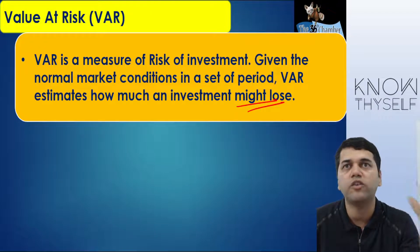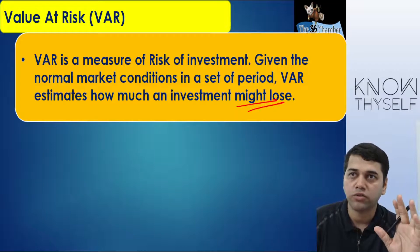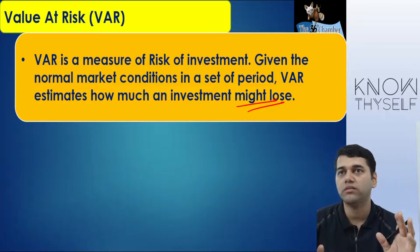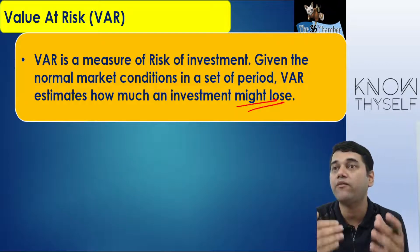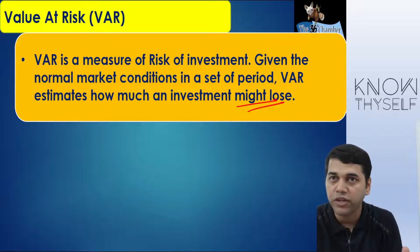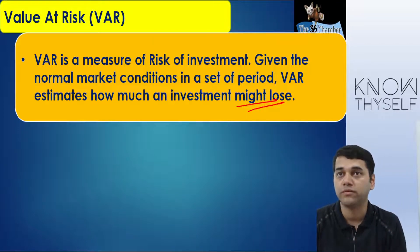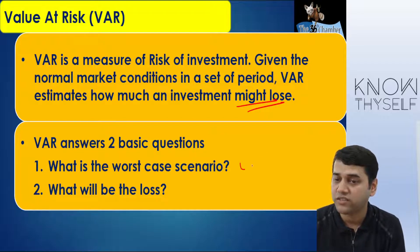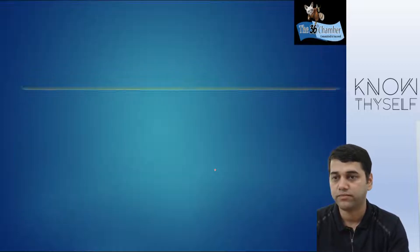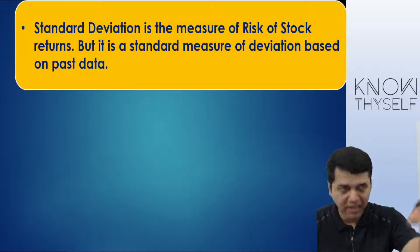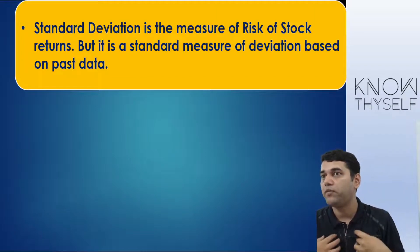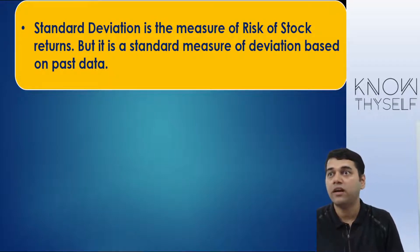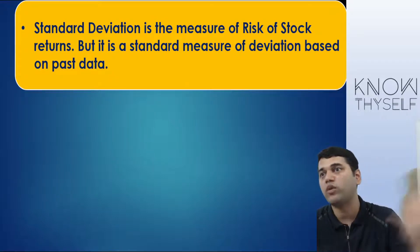Today if you invest 100 rupees, today only 100 rupees is not lost. There is some standard deviation for the stock. At a given point of time, how much might I lose? VAR is going to answer two questions: what is the worst case scenario and what will be the loss? It will show you at a given time how much you might lose immediately. At least if I come to know, I am prepared for it, so that the moment that happens I can square off my position and come out of it.